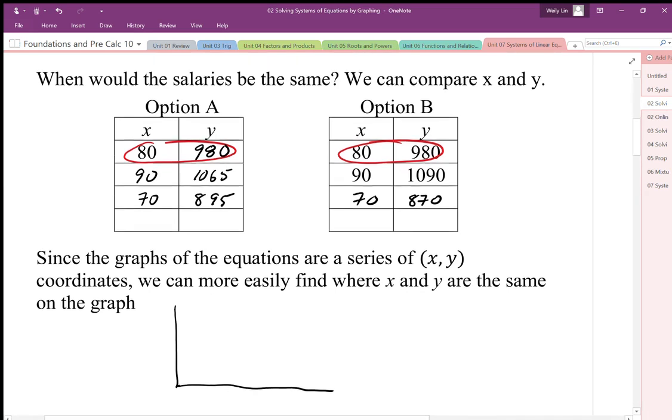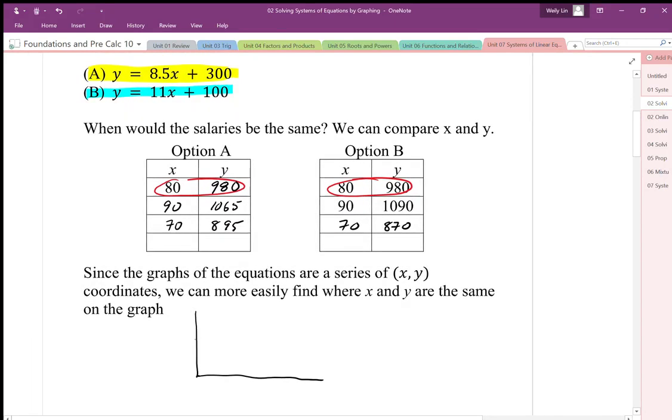So in option A, it is a linear relationship with a starting value of 300 and a slope of 8.5. Option B is going to start with less money, and it's going to have a greater slope. So option A, option B, and where they are the same is going to be this point right there. At 80 hours, we're going to have the same pay. And we can then analyze this situation based on the comparison of these two relationships. And we can see when these two relationships are the same, or in other words, where these two relationships meet.